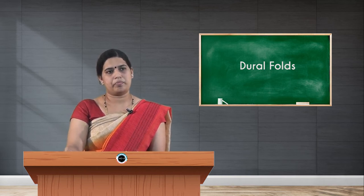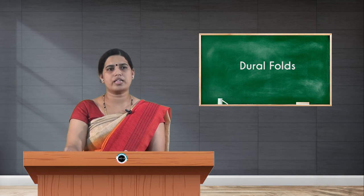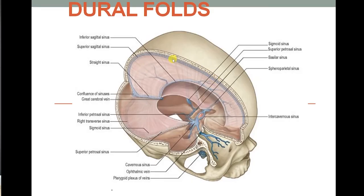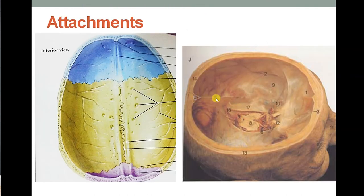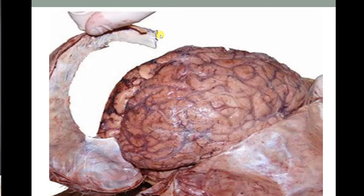The venous sinuses related to falx cerebri are: the superior sagittal sinus along the attached margin, the inferior sagittal sinus at the free margin of the dural fold, and the straight sinus at the junction where the posterior aspect of falx cerebri merges with the tentorium cerebelli. You can see the cut portions of falx cerebri merging with the tentorium cerebelli, and separately the sinuses: superior sagittal sinus, inferior sagittal sinus, and straight sinus.